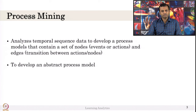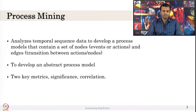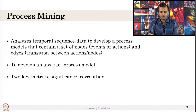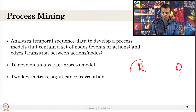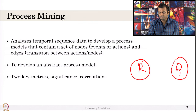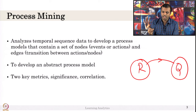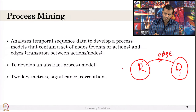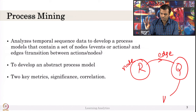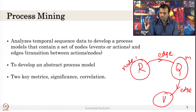The aim is to develop an abstract process model, and there are two key metrics: significance and correlation. Nodes can be actions — for example, node A is 'read' and node B is 'quiz.' The transition between these nodes, like read to quiz, is an edge. Maybe this goes to 'watch video,' which is another edge. So we have node 1, node 2, node 3. There are two matrices: significance and correlation.